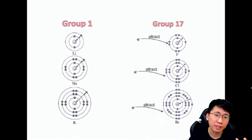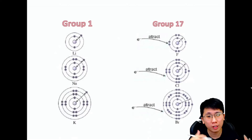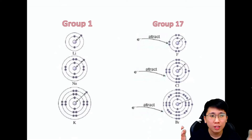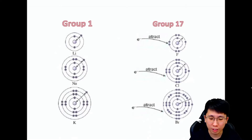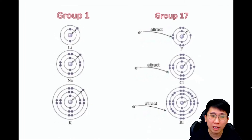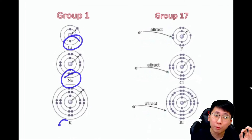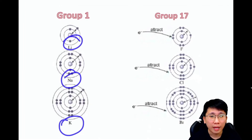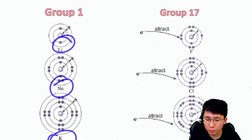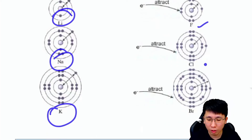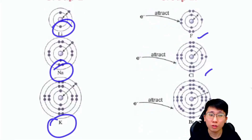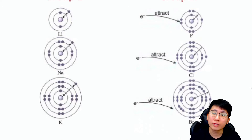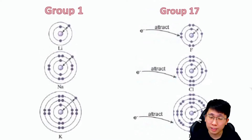For Group 1, we have lithium, sodium, and potassium. For Group 17, we have fluorine, chlorine, and bromine. Knowing all the elements inside these two groups is the first thing you should know. The next thing is that Group 1 and Group 17 behave in different ways.